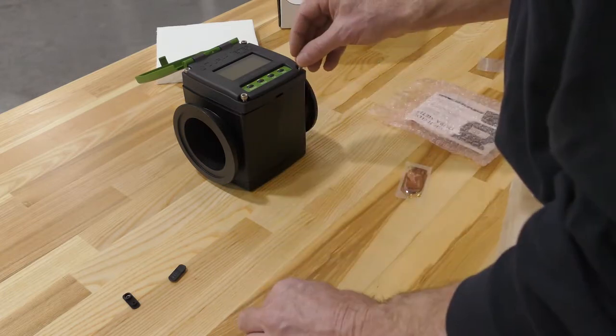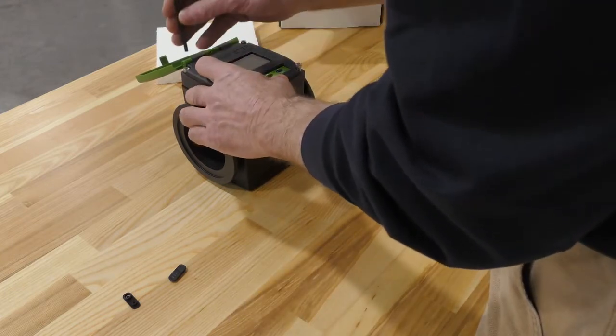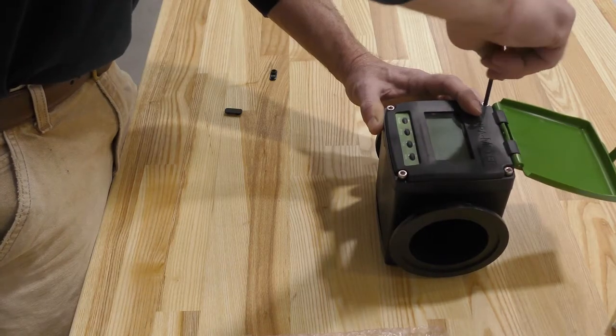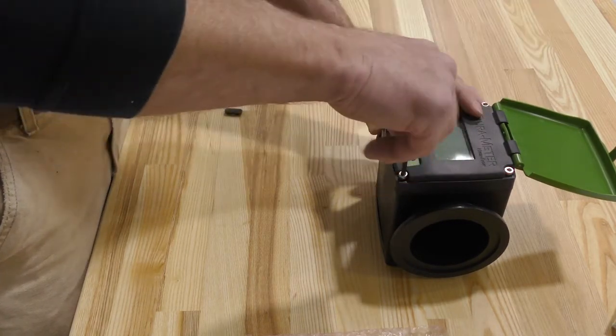Use the 532 hex wrench to secure the face plate to the meter body. Only tighten until snug. 10 to 15 inch pounds is sufficient.